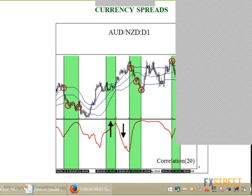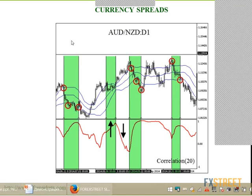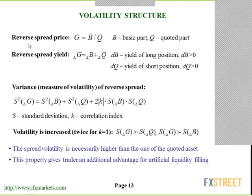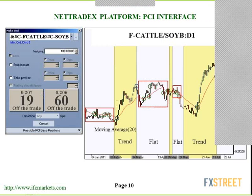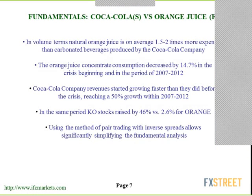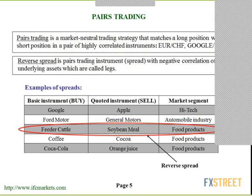Currency markets are more regulated than commodity markets, and central banks are always trying to stabilize spreads between currencies. That is why mean reversion is probably a more profitable approach for pairs trading in Forex — that is my personal experience. Most forex brokers provide CFDs on commodities, so you may use stocks like Coca-Cola, Google-Apple, or Ford-General Motors for pairs trading instruments and likely get interesting results.